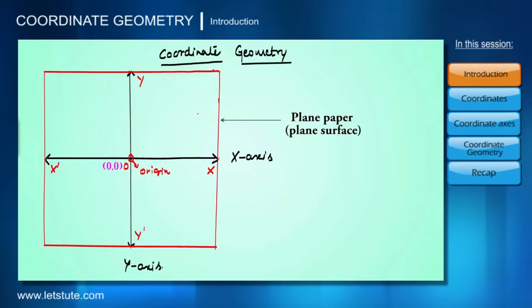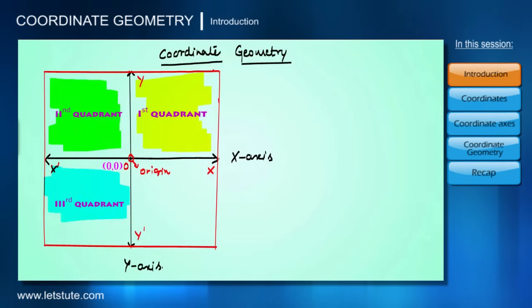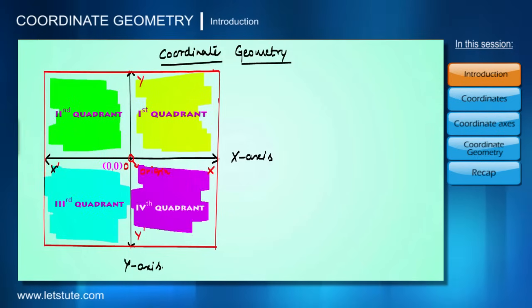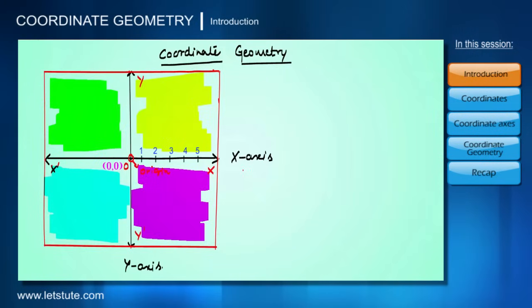These are the first quadrant, second quadrant, third quadrant, and fourth quadrant. The x-axis possesses positive values on the right side of the origin and negative values on the left side of the origin.